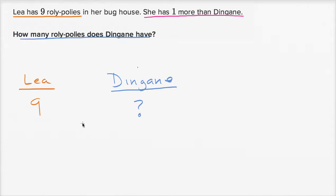It's always good when you look at a word problem like this to ask: will Dingane have more or less than Leah? Well, it says Leah has one more than Dingane. So Leah is going to have more — one more. So Dingane is going to have one less than Leah. If Leah has one more than Dingane, then Dingane has one less than Leah.